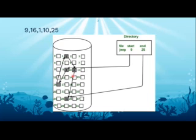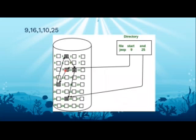We start from block 9. Make an arrow from 9 to 16 — you should always keep arrows because they show the linked allocation method. Then from 16 to block 1, then from 1 to 10 connectivity, and at last it goes to 25 and ends with minus 1, indicating the null pointer. The directory field starts from block number 9 and ends with 25. This is a simple concept about the linked list file allocation.